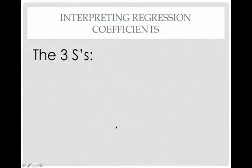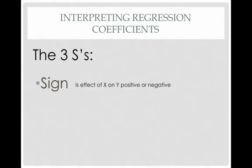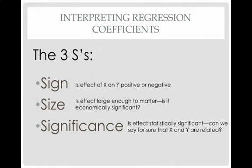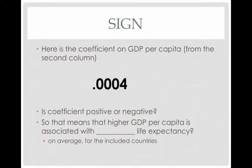When you interpret regression coefficients, there are three things to examine — the three S's. Sign: is the effect of x on y positive or negative? Size: is the effect large enough to matter — is it economically significant? Significance: is the effect statistically significant — can we say for sure that x and y are related? Starting with sign: the coefficient on GDP per capita is 0.0004, which is positive, meaning higher GDP per capita is associated with longer life expectancy, on average for the included countries.